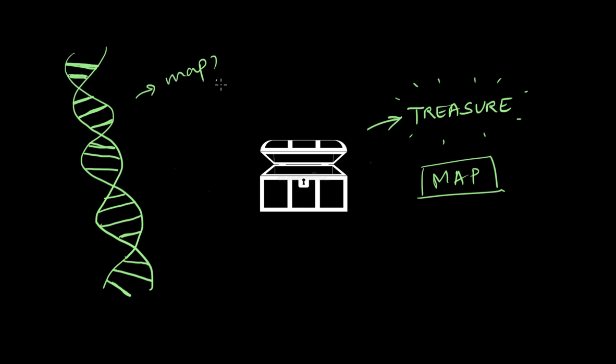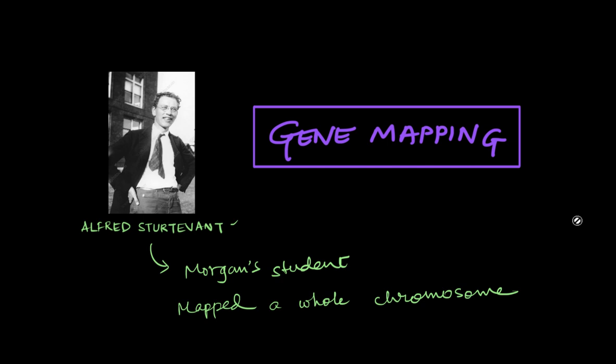We have a map that tells us the location of each and every gene perfectly in our entire system. But how did we manage to do something like that? Did we actually get a huge microscope and look into every tiny chromosome? Well, not really. In this video we'll be talking all about what gene mapping is, who came up with it, and how we can possibly find out the location of something so tiny.